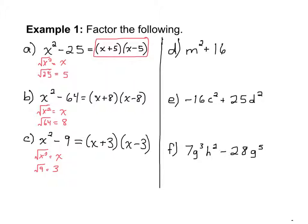In part d we have m squared plus 16. m squared is a perfect square and 16 is a perfect square, but we have addition — so this is not a difference of squares and we cannot factor it using that pattern. In example e we have minus 16c squared plus 25d squared. We also see a plus in the middle, but we can rewrite this polynomial as 25d squared minus 16c squared, and then it is a difference of squares.